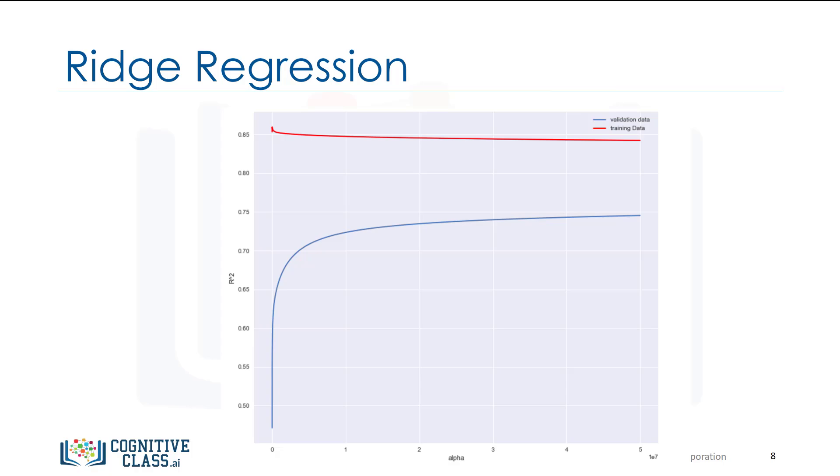The overfitting problem is even worse if we have lots of features. The following plot shows the different values of R squared on the vertical axis. The horizontal axis represents different values for alpha. We use several features from our used car data set and a second order polynomial function. The training data is in red and validation data is in blue.